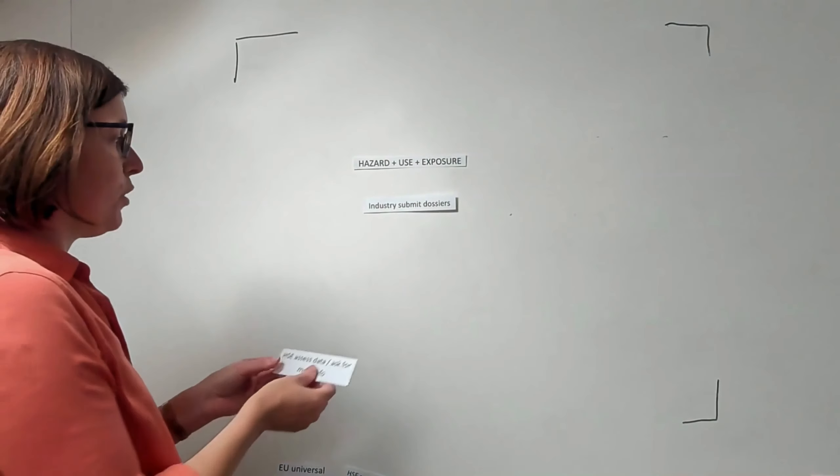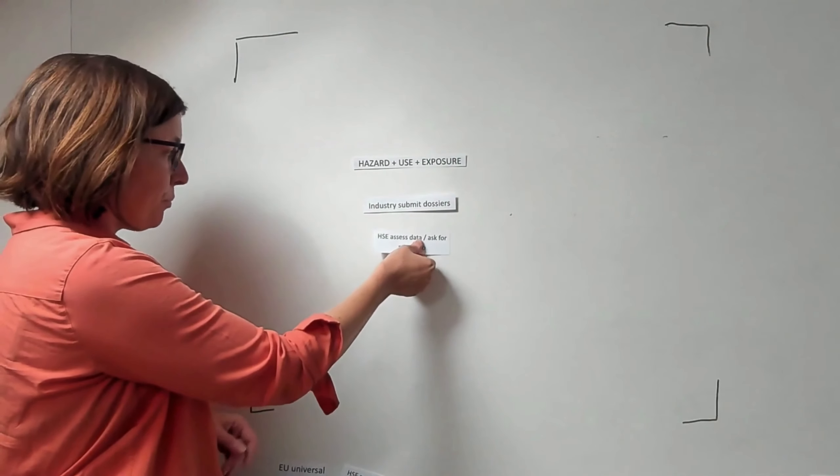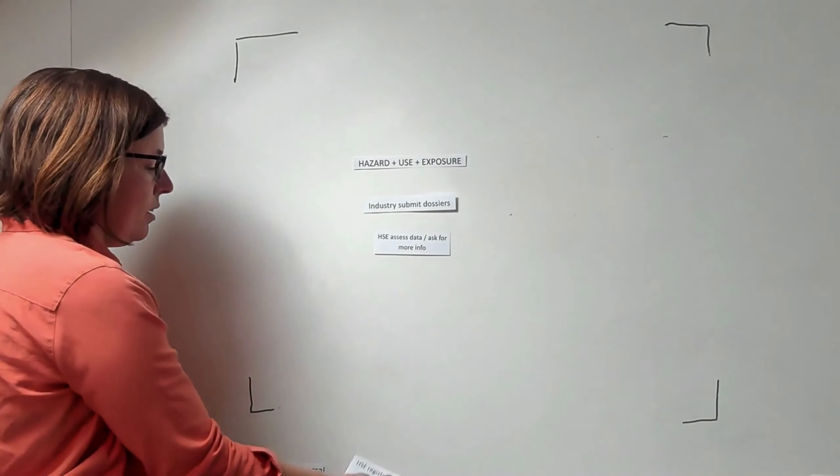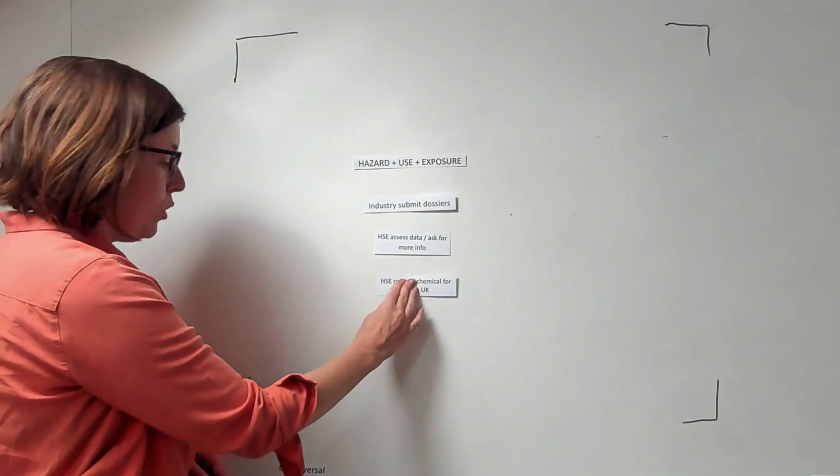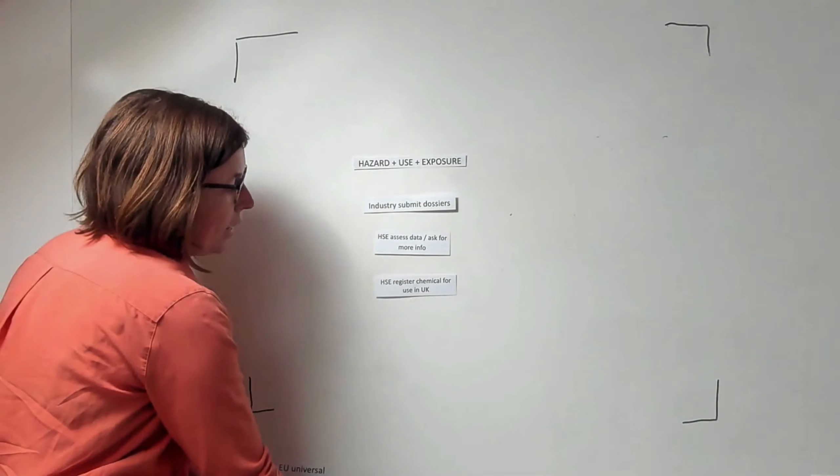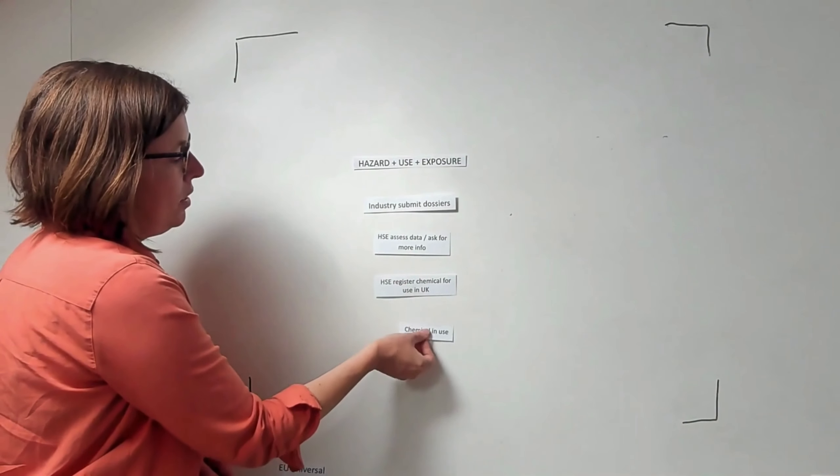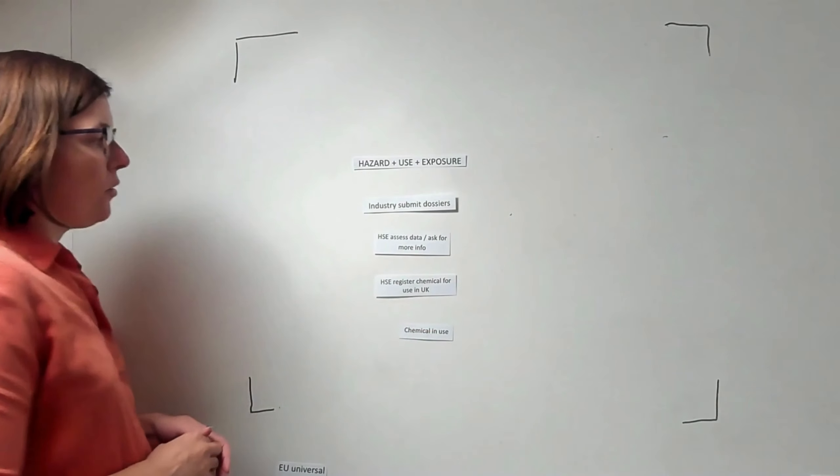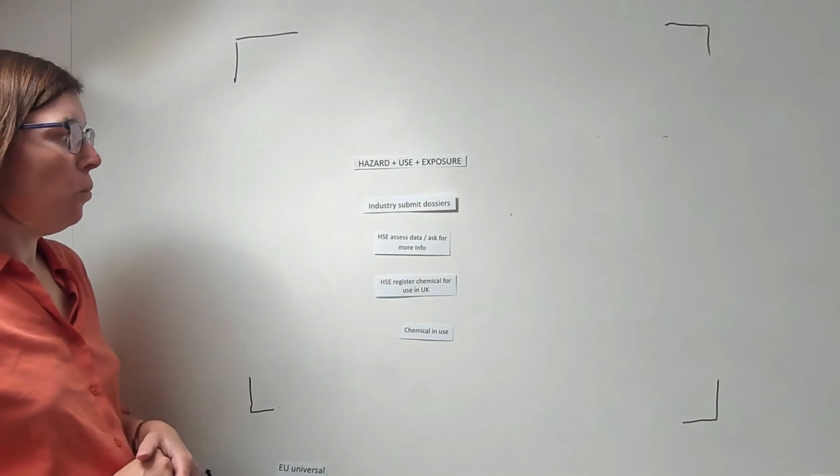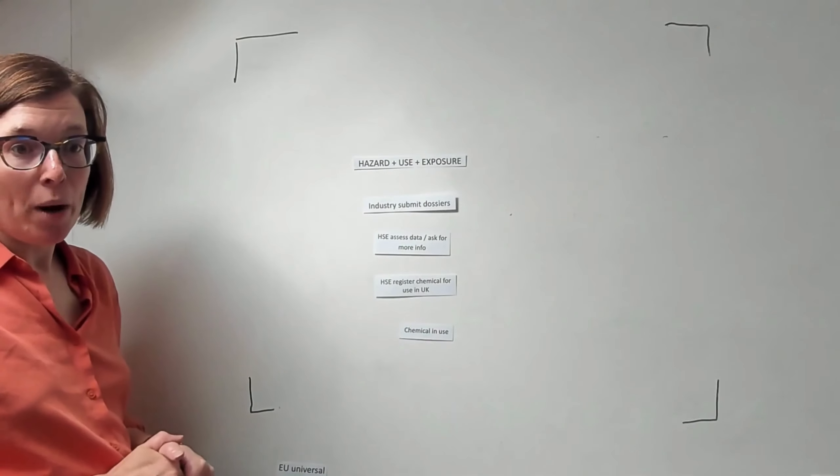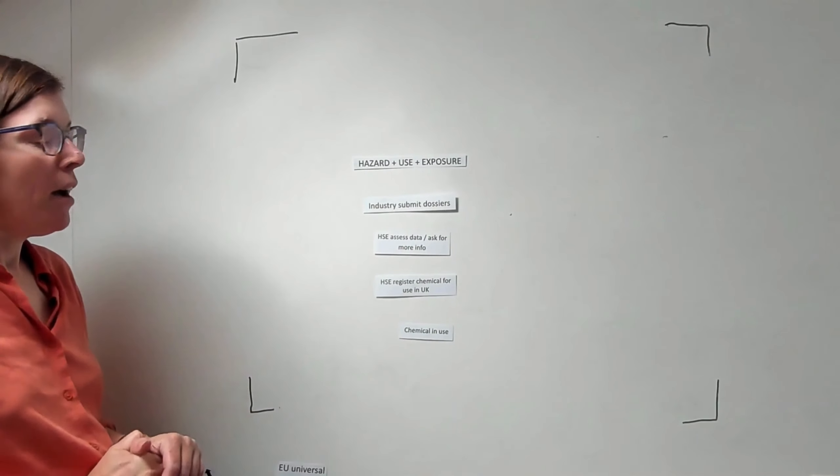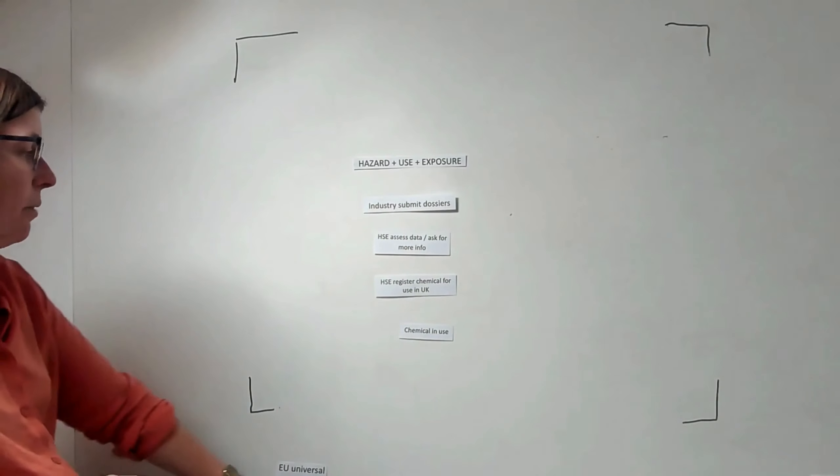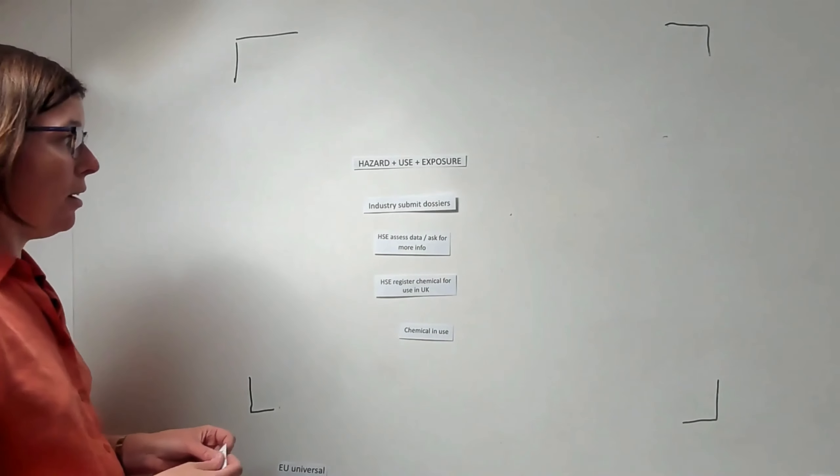HSE will assess the data and they may ask for more information. Once they've got all the information that they need, then the HSE can register that chemical for use in the UK and the chemical can enter into use. That's how it's all supposed to work. At the moment though, we don't have information about what data is actually required by the HSE, and at the moment there is no data on the chemicals on the UK market.